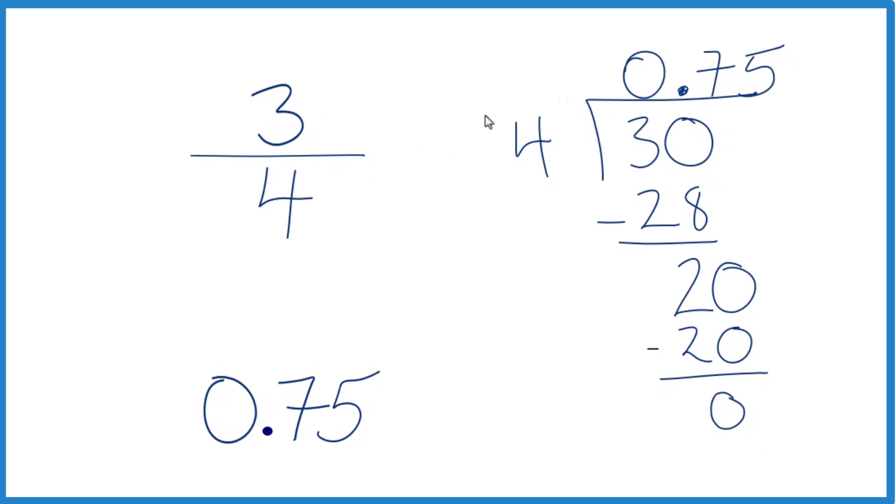So 3 fourths gives us the decimal 0.75. And that means when we compare the fraction 3 fourths to the decimal 0.75, they're equal. They have the same value.